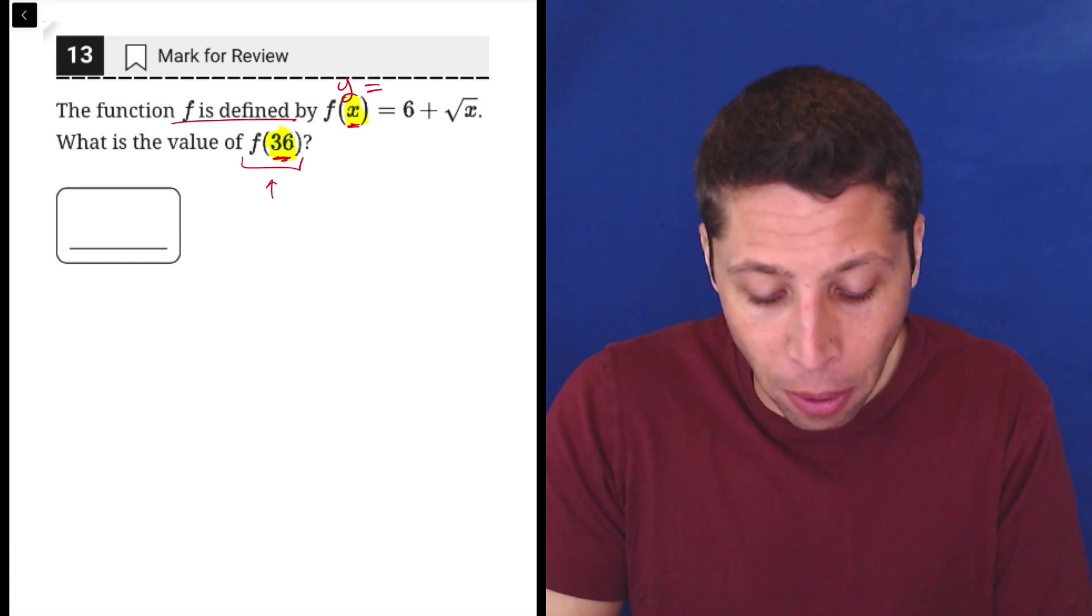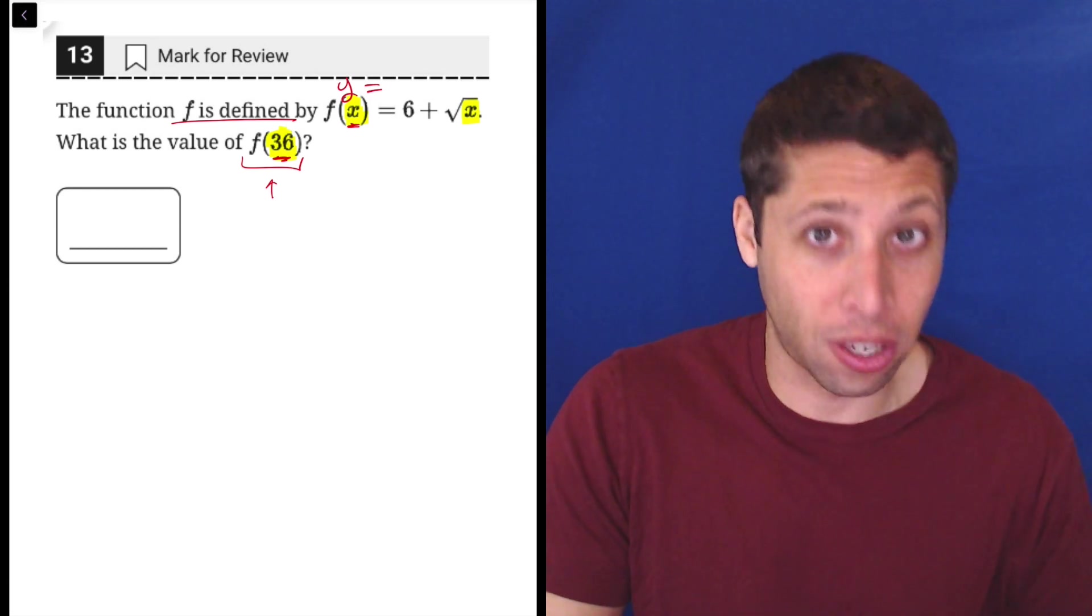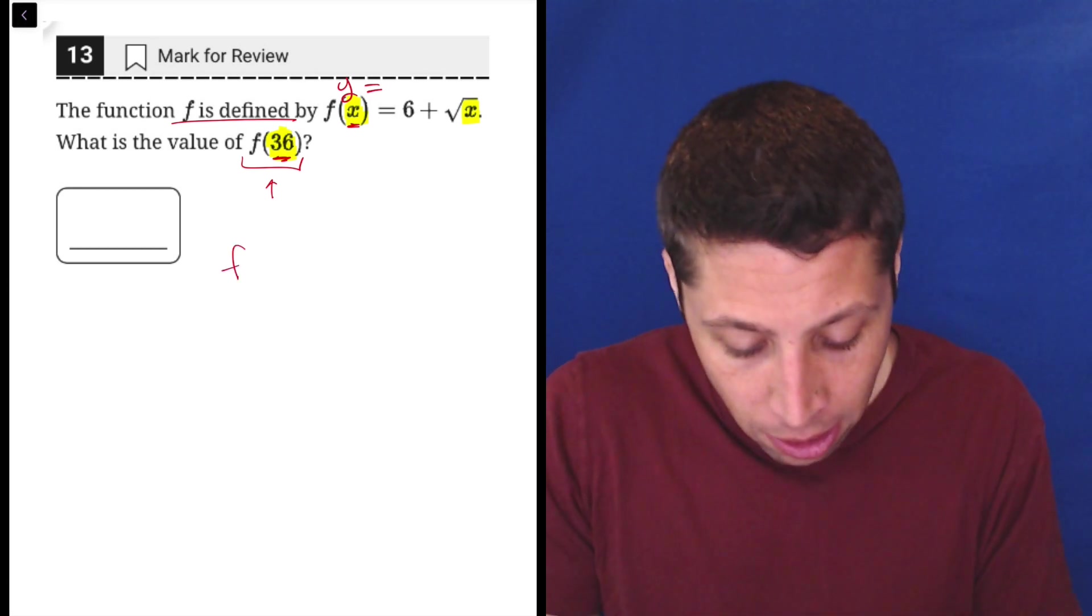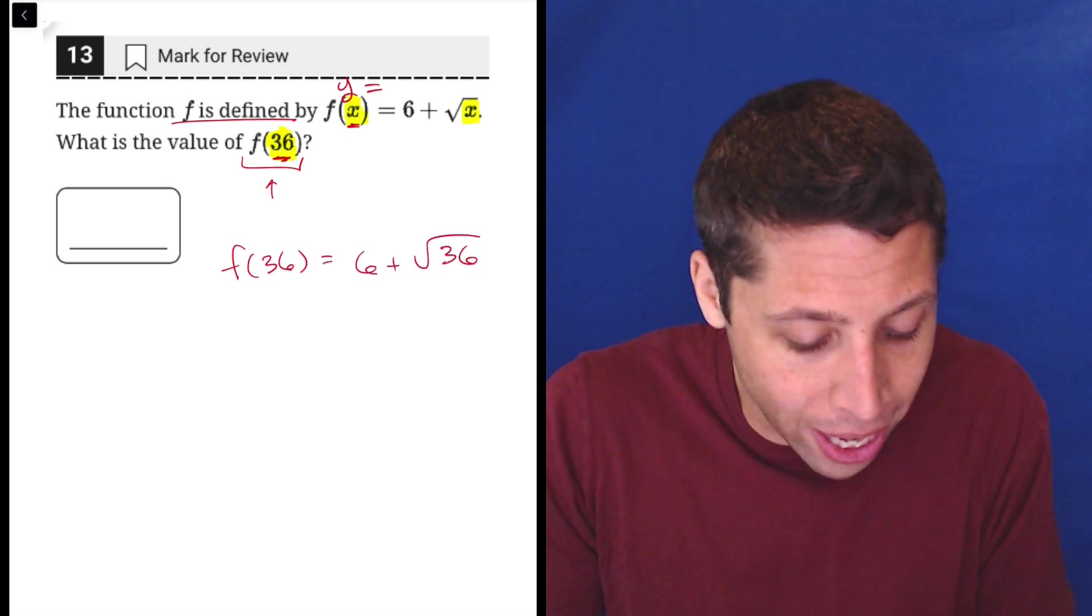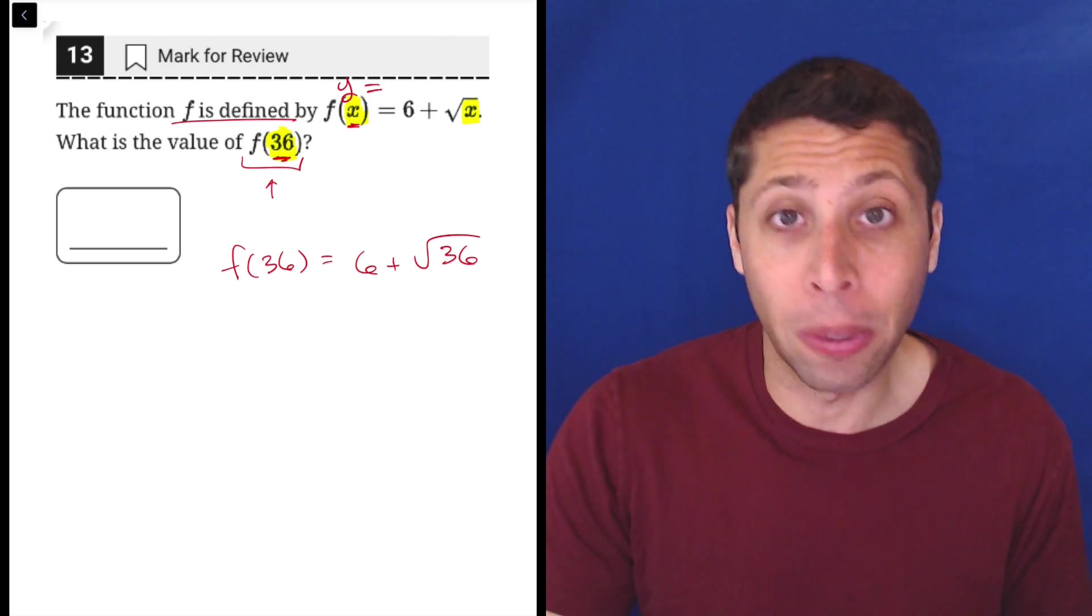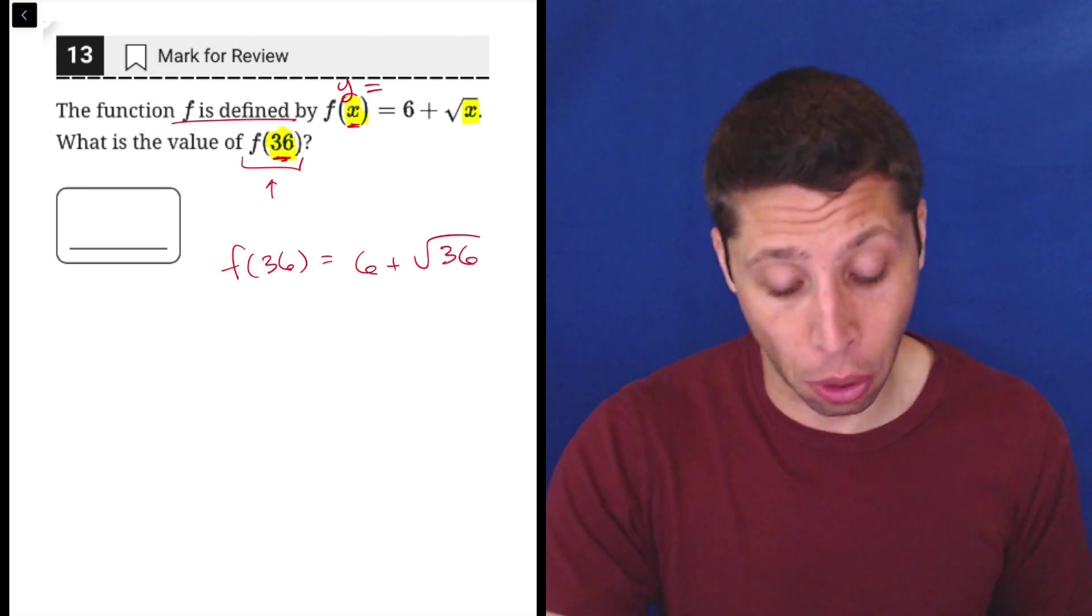So we need to just follow that as an instruction and say, okay, if the x is getting replaced by 36 there, then maybe we should replace the x on the other side with a 36 as well. And that's literally all this means. So if they say f of 36, we're taking our equation, rewriting it, but instead of an x, now it's going to be 36 in all the places. In this case, there's only one x, but if there were multiple x's, they would all get replaced with a 36.